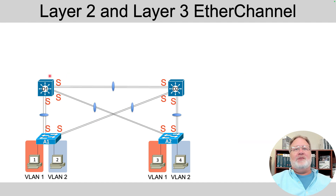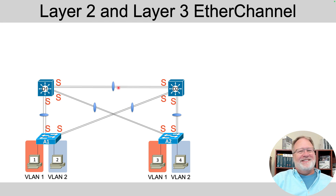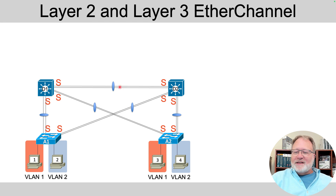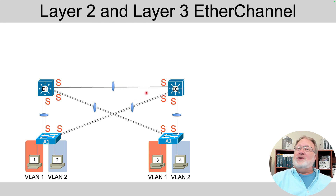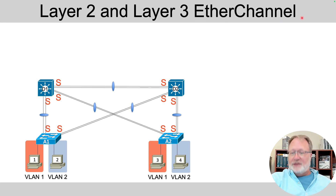Once you have that down, we get to yet another deeper complexity. Instead of one link between each pair of switches, we can have two, three, four, or up to eight. We can combine them — as represented by the little ovals in the diagram — and when you combine them like that you can load balance the traffic over them, expanding the capacity and availability in your network. We call those EtherChannels, and you'll see that term in the exam topics.